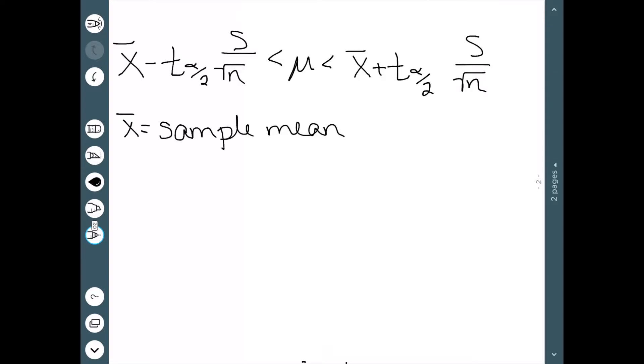X bar is going to be our sample mean. This is something that we have already. S is our sample standard deviation. While we don't know the population standard deviation, we can find the sample standard deviation. n is the sample size. How big is our sample?